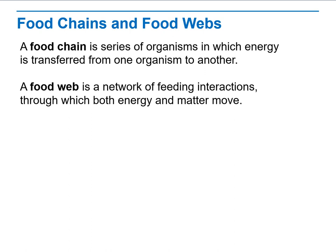Food chain and food web — what is the definition for food chain, and what's the definition of the food web, and how they are different from each other. When we're talking about a food chain, a food chain is a series of organisms in which energy is transferred from one organism to another, only from A to B. In a food web, it's a network of feeding interactions, meaning you have more than one pathway through which both energy and matter move.